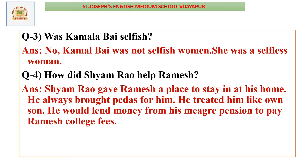Question number four: How did Sham Rao help Ramesh? Sham Rao gave Ramesh a place to stay at his home. He always brought pedas for him. He treated him like his own son. He would lend some money from his meager pension to pay Ramesh's college fees when Ramesh was late in paying them. In this way, Sham Rao helped Ramesh.